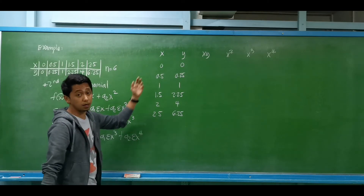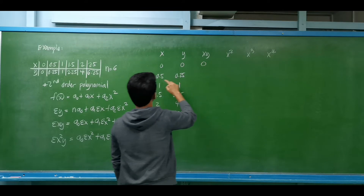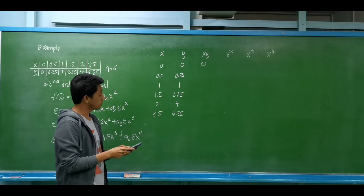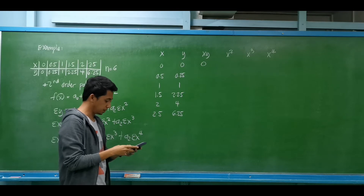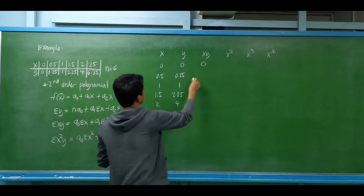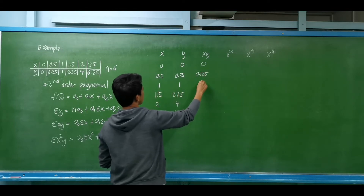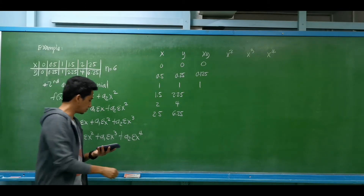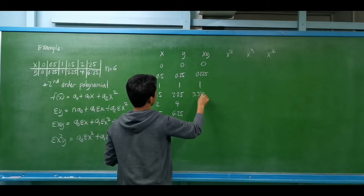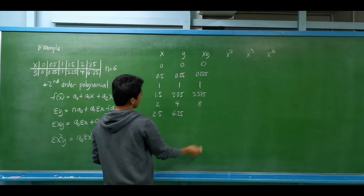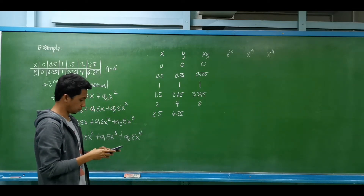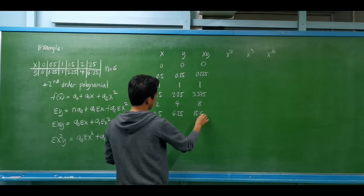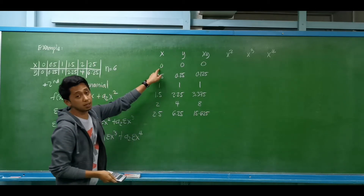For the product of x and y: 0×0 = 0; 0.5×0.25 = 0.125; 1×1 = 1; 1.5×2.25 = 3.375; 2×4 = 8; and 2.5×6.25 = 15.625.